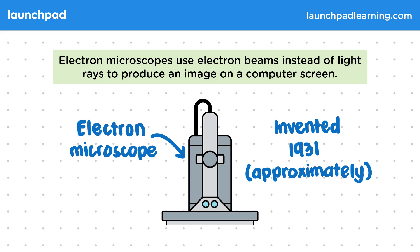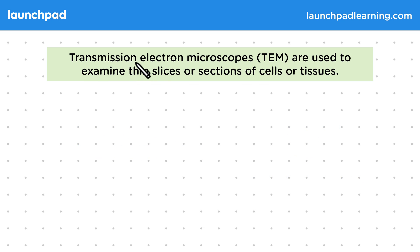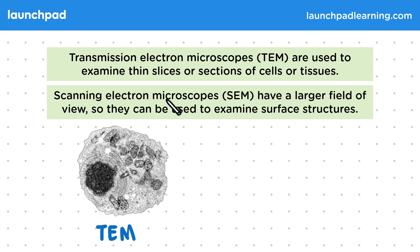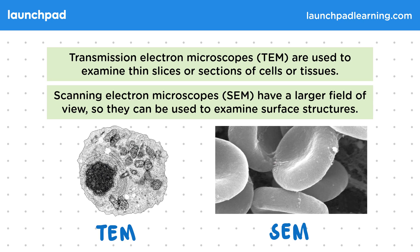There are two types of electron microscope. Transmission electron microscopes, or TEM, are used to examine thin slices or sections of cells or tissues, and were first invented in 1931. Scanning electron microscopes, or SEM, have a larger field of view, so they can be used to examine surface structures; they were invented a little bit later in 1937 and are often used at lower magnifications.